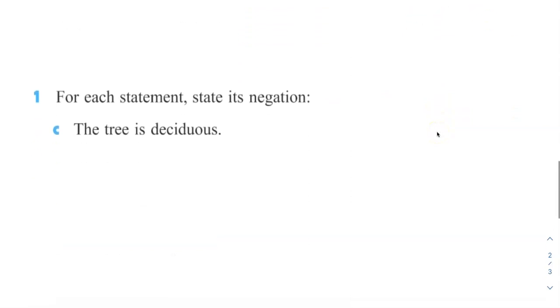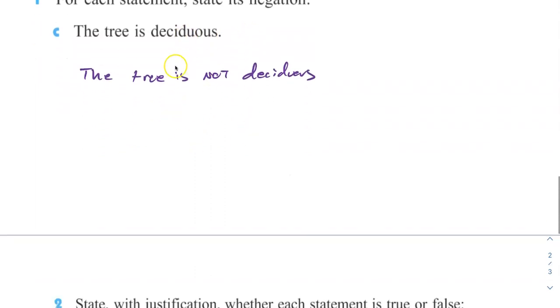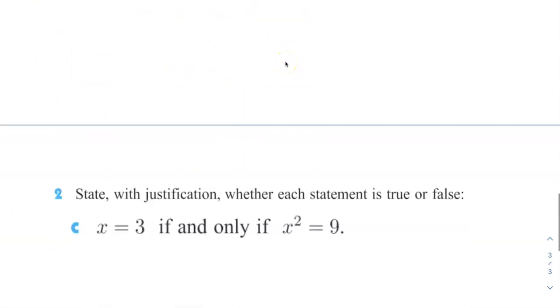So let's do some more examples. For this one, for each statement state its negation. The tree is deciduous, which means I think it's losing leaves. It's like falling. So you can say the tree, I would say the tree is not deciduous. And there we go. It's probably a fancy word for that. I don't know it. But the tree is not deciduous. So it's not losing leaves right now.